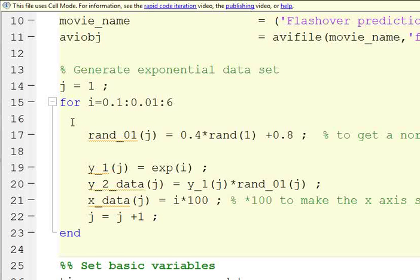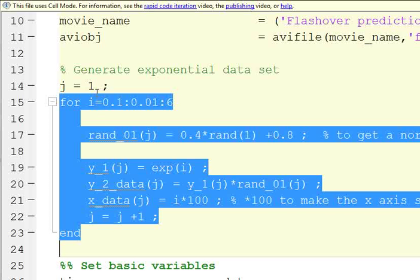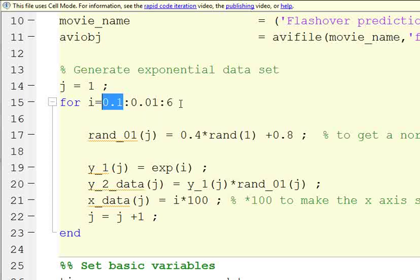So first off to do this we want to generate a set of exponential data. So we do a little for loop. We start with a counter. We say we're going to go from point one to six by point one.